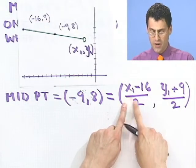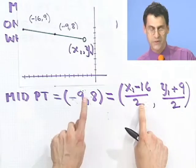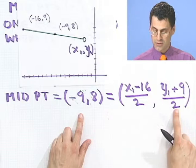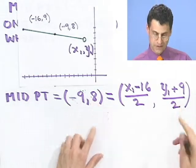Okay. Well, now I can find x1 because I know this thing, x1 minus 16 over 2, equals minus 9. So if I set those two things equal to each other, I can solve for x1. Similarly, I know that y1 plus 9 all over 2 equals 8, so I can solve this thing, in fact, for y1. So let's do that. So if I solve the first thing, what do I see?